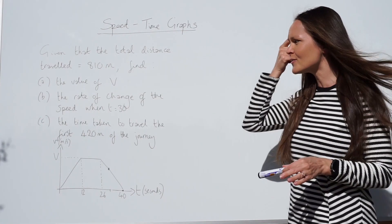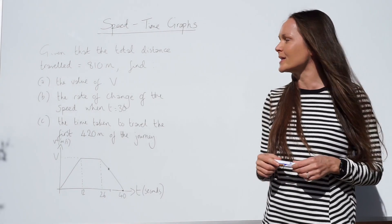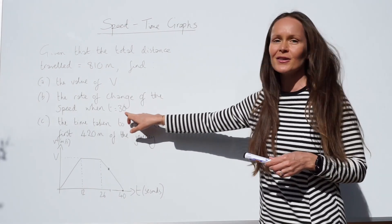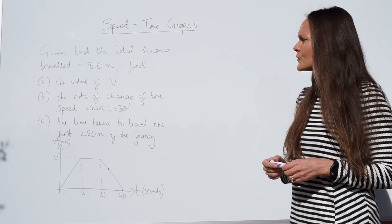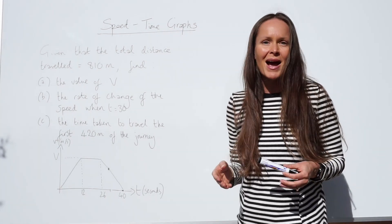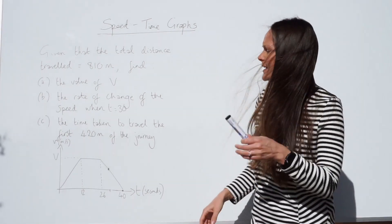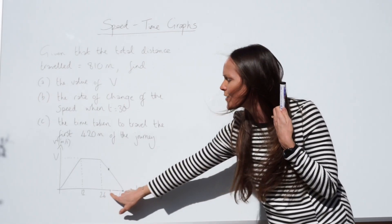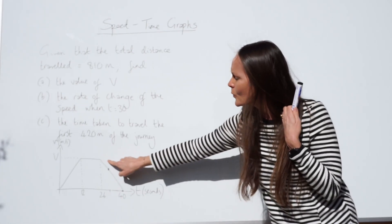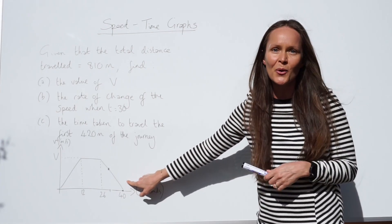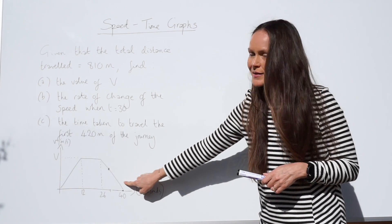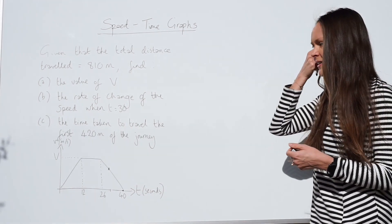So for part B, we have to work out the rate of change of the speed when time is equal to 30 seconds. Rate of change of the speed is just the same as acceleration. So if we look on the graph, I've marked approximately where the time is equal to 30 here. And to work out the acceleration, you need to work out the gradient of this line here.